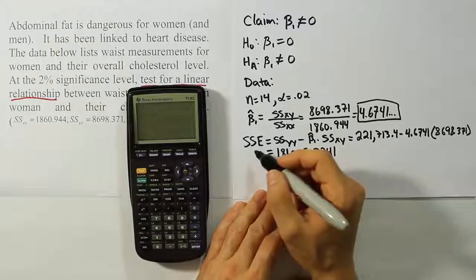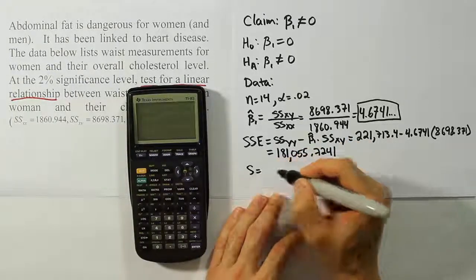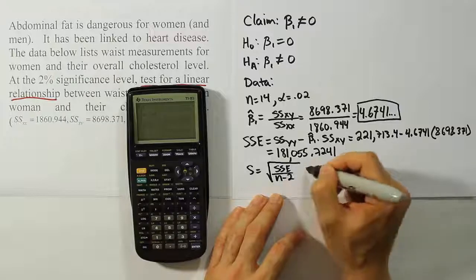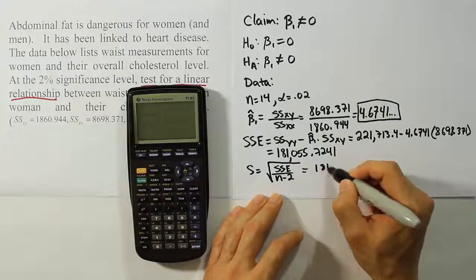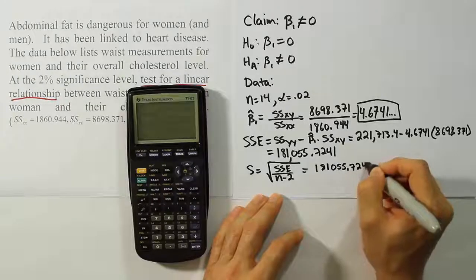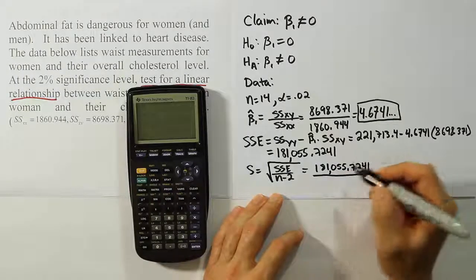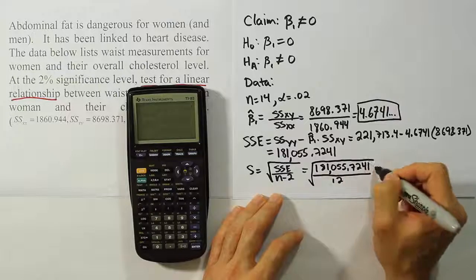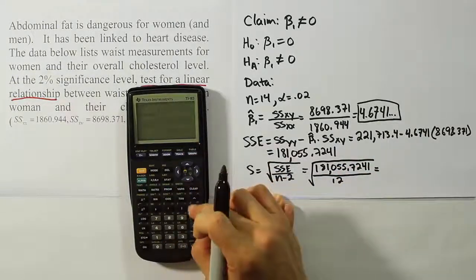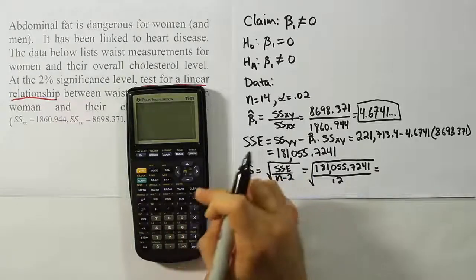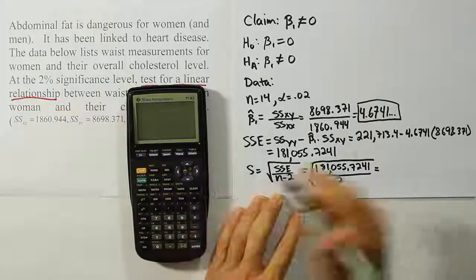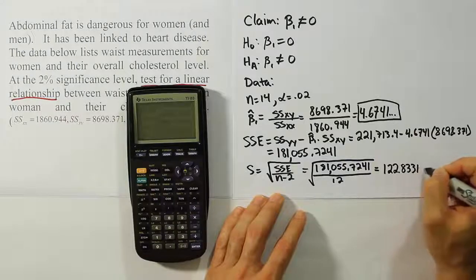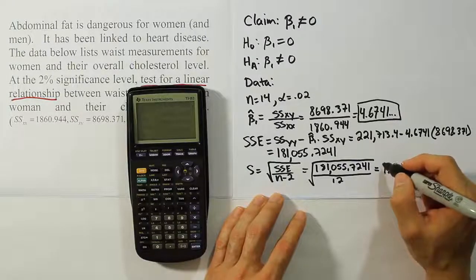Our next step after getting the sum of square for error is to come up with S. S is very simple here. It's the square root of SSE divided by the degrees of freedom N minus 2. So in our case, that's going to be 181,055.7241 divided by N minus 2, which is going to be 12 in this case, all under the square root. I'm going to divide by 12, and then raise it to the 0.5 power. And when I do that, I get a value of 122.8331267.